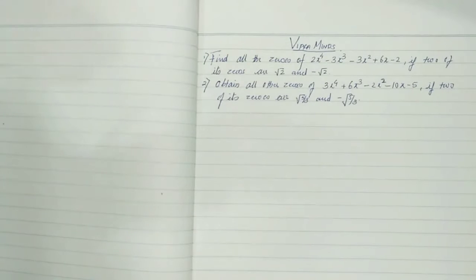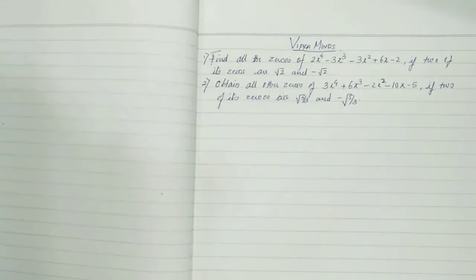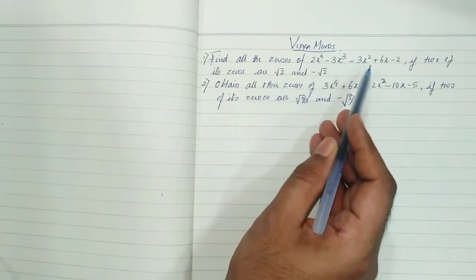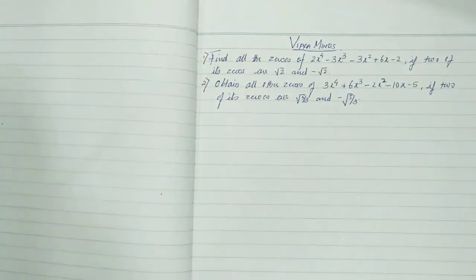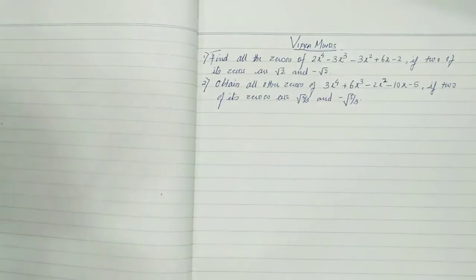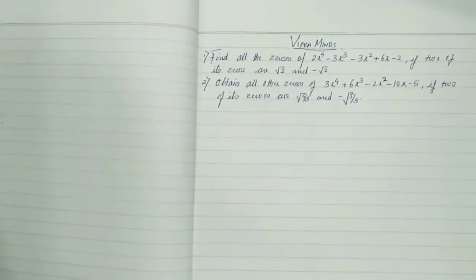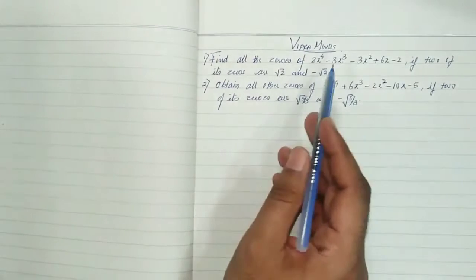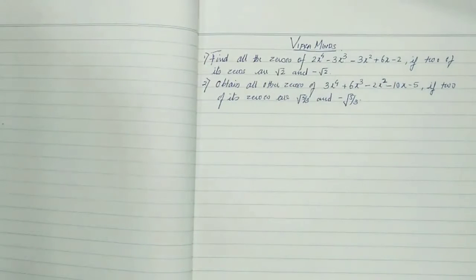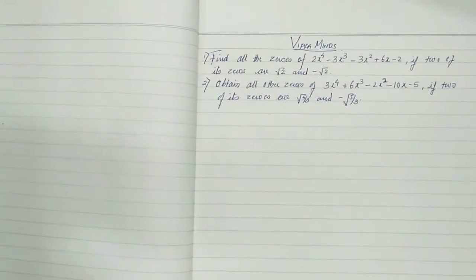Now how many zeros will it have? Since this is a biquadratic equation of degree 4, it will have 4 zeros. A zero is that value of x which, when substituted in the expression, makes the polynomial equal to zero. So if we put x = √2 or x = -√2, the polynomial equals zero. These are two zeros, and we have to find the other two.